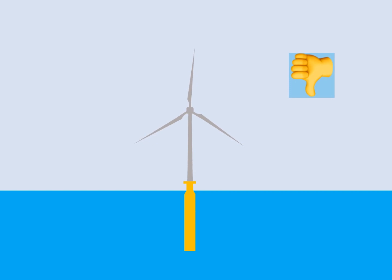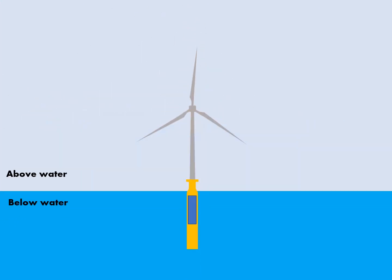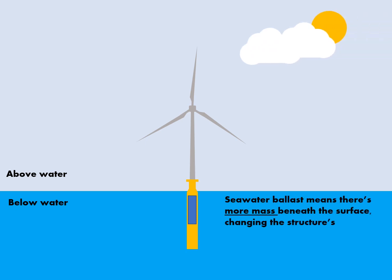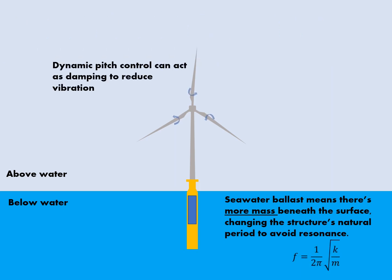As well as being filled with solid ballast, SPAR buoys can also take on seawater ballast. This can be done to change the draft of the turbine as well as to change the mass of the overall structure. Seawater ballast means that there's more mass placed beneath the surface, changing the structure's natural period to avoid resonance.